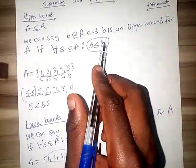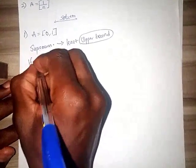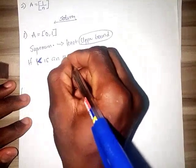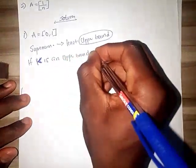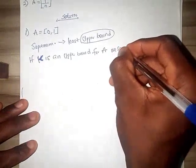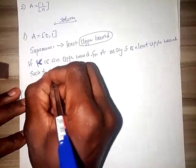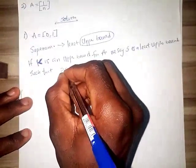Now let's define what upper bound is. If k is an upper bound for A, you can use any letter to define whatever you want to define. We say s is a least upper bound such that s is less than or equal to k.